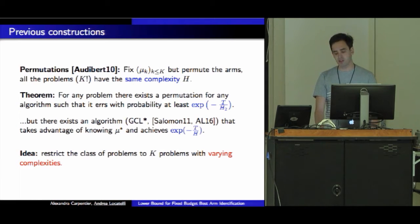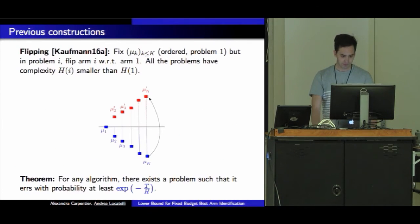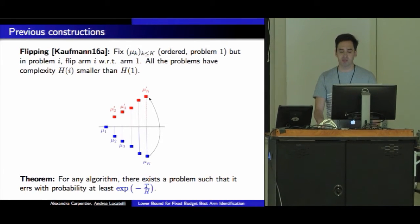The best we could hope for is that if we improve on this construction, we can maybe get exponential minus t over H, but we're never going to get the log K factor. The idea is to restrict ourselves to K problems with varying complexities and different best means. A really nice construction in Kaufmann recently is a flipping construction. Again, I fix my arms' means, assume they're ordered, and call that problem 1. Then in problem i, I flip arm i with respect to arm 1, defining K different problems.